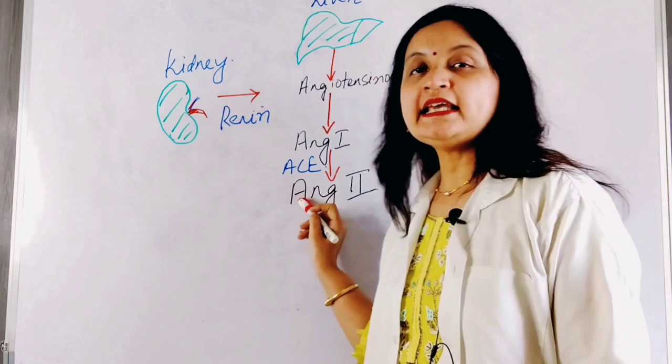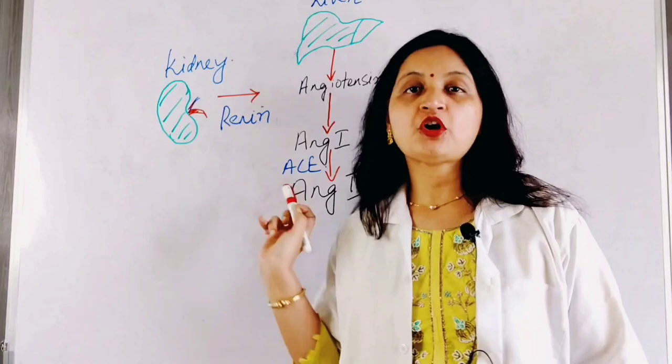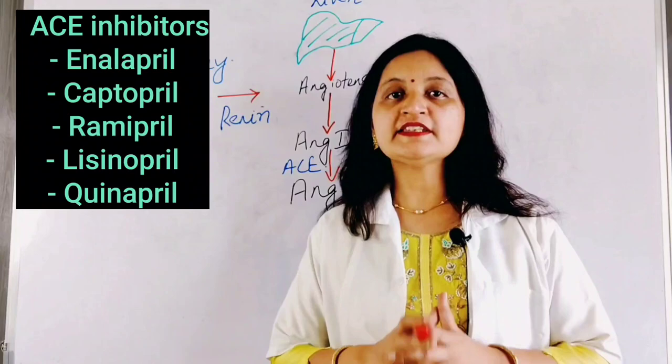ACE inhibitors inhibit the angiotensin-converting enzyme and thereby decrease the formation of angiotensin-2. These drugs include captopril, enalapril, lisinopril, ramipril, and quinapril.